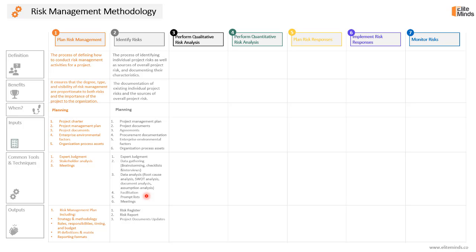The key outputs of this process will be the risk register, which includes all the identified risks with their key characteristics, and the risk report, which gives a brief about the overall project risk exposure. Some project documents may be updated as an outcome of this process, like the assumption log. Once risk identification is over, we can start performing the qualitative risk analysis process, or the subjective risk analysis process. In this process, we will prioritize the identified risks from the previous step.